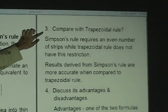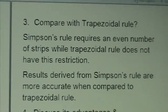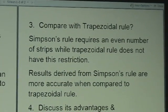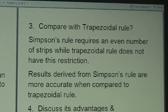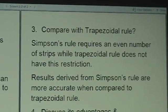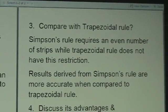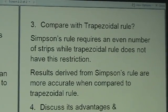Comparing with the trapezoidal rule, Simpson's rule requires an even number of strips, while trapezoidal rule does not have this restriction. And the results derived from Simpson's rule are more accurate when compared to the trapezoidal rule.